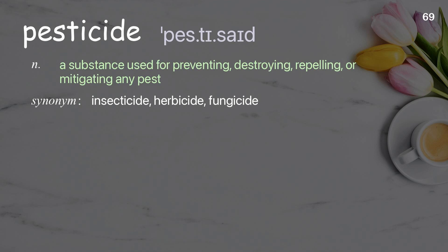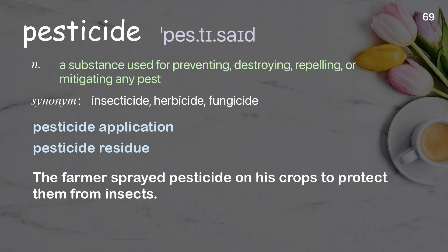Pesticide: A substance used for preventing, destroying, repelling, or mitigating any pest. Examples: Pesticide application, Pesticide residue. The farmer sprayed pesticide on his crops to protect them from insects.